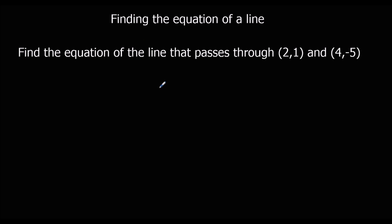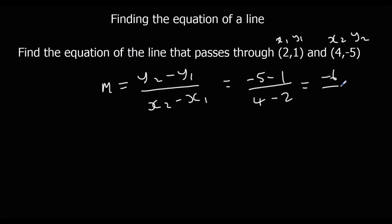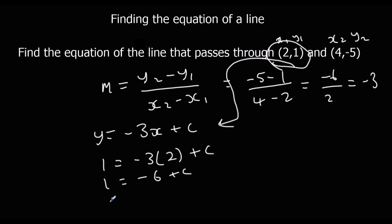Let's do another example. Finding the gradient using y2 minus y1 over x2 minus x1: labelling x1, y1, x2, y2 and substituting in, we get minus 5 minus 1 over 4 minus 2, which is minus 6 over 2, giving a gradient of minus 3. So y equals minus 3x plus c. Substituting in x equals 2 and y equals 1: 1 equals minus 3 times 2 plus c, so 1 equals minus 6 plus c, meaning c equals 7. Therefore y equals minus 3x plus 7.